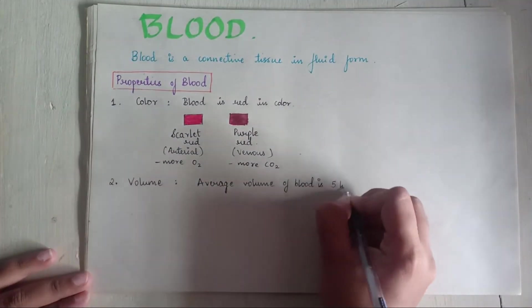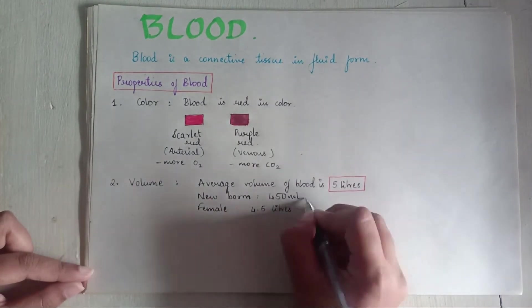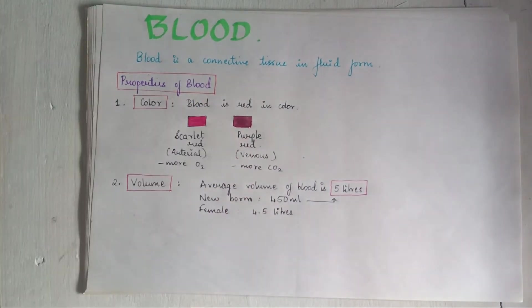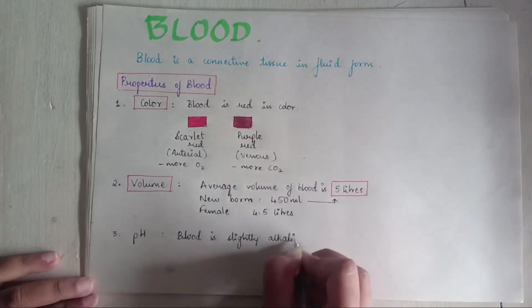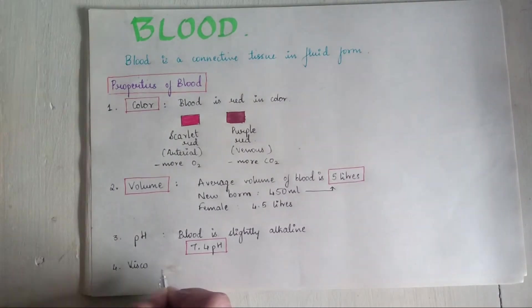Second volume. The average volume of blood is 5 liters. In newborn it is 450 ml and in females it is 4.5 liters. pH: Blood is slightly alkaline in nature with 7.4 pH.